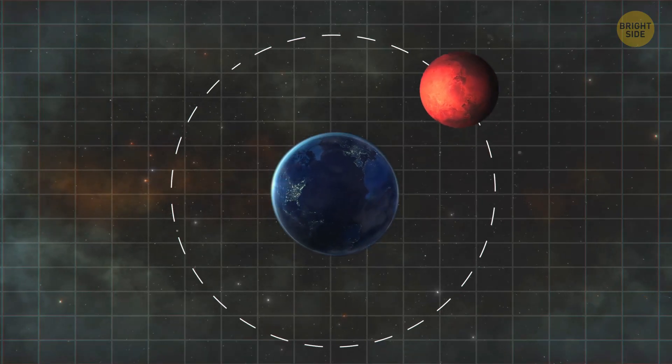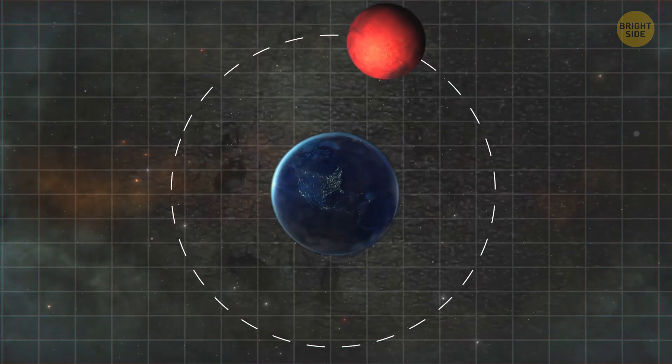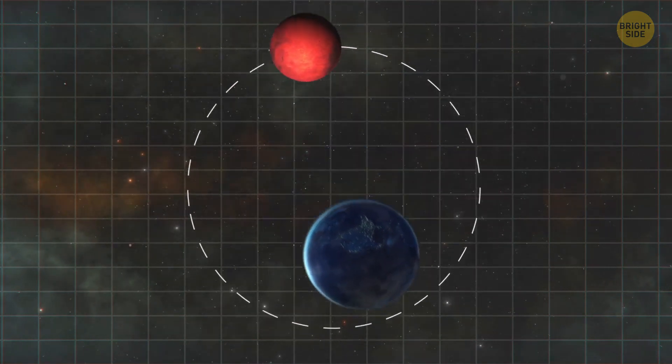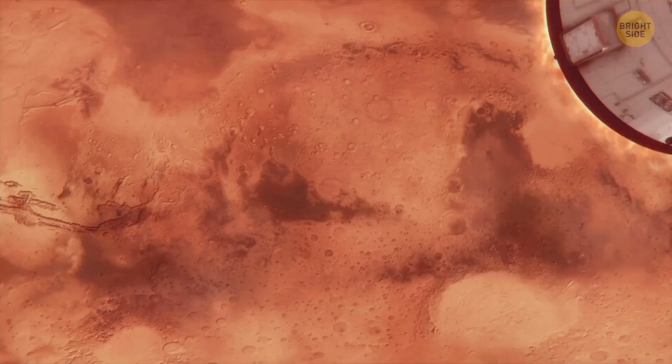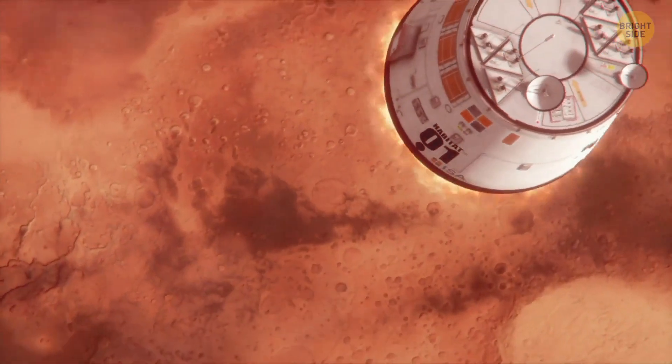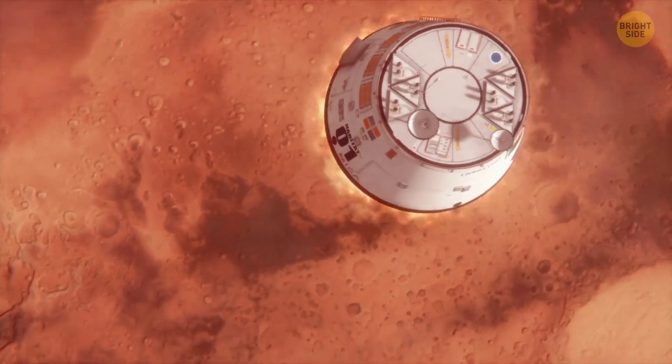Mars isn't large enough to change the Earth's orbit dramatically. But with time, the two planets would probably begin to orbit each other, creating a binary planet system. And since Mars would literally be next door, voyages to this planet would become a reality.